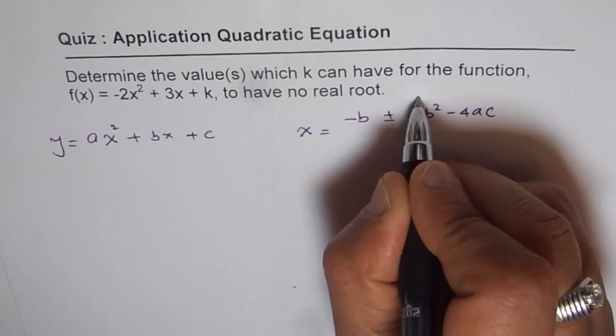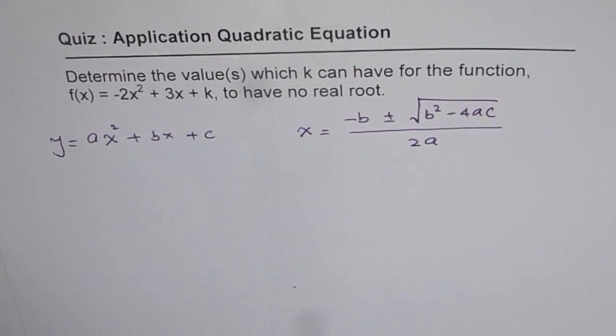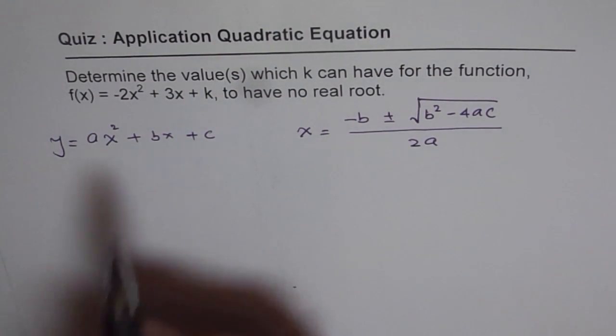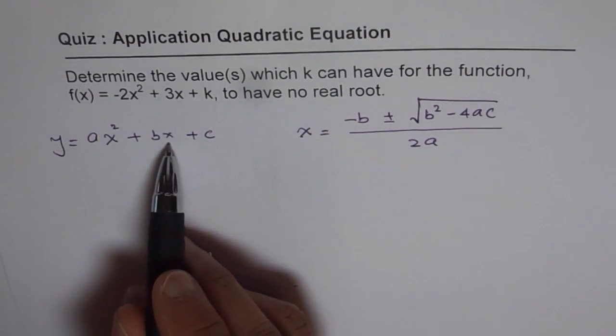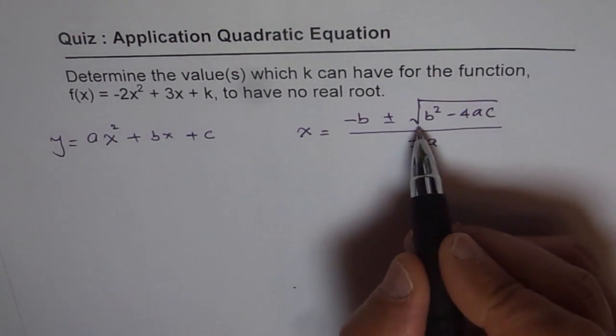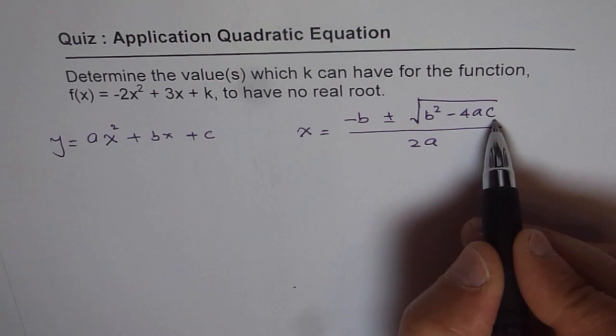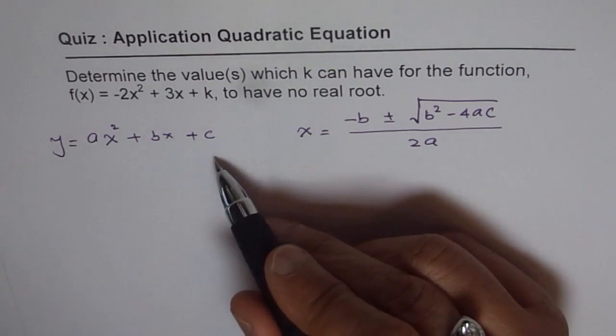That is the solution of the given quadratic equation where a is the leading coefficient, b is the coefficient for x, and c is the constant. This part here is called discriminant. It decides how many roots will the function have.